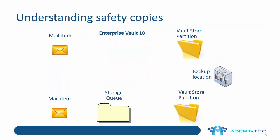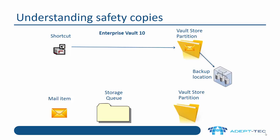Now let's look at understanding how safety copies work and how they interact with backup. In Enterprise Vault 10, when a mail item is archived, a pending item is created within Exchange. The item is also archived within the Vault Store partition. This pending item is referred to as a safety copy, and we don't want to turn it into a shortcut or strip out the content until we've backed up Enterprise Vault. When the backup is complete, the item can be turned into a shortcut.